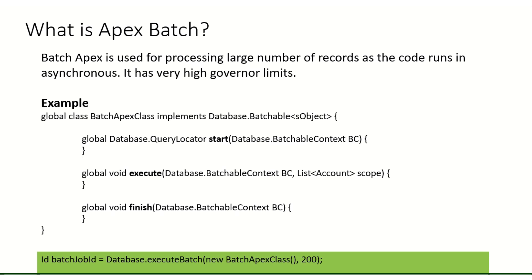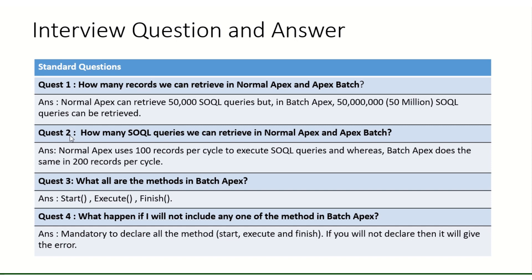There are two ways to run a batch. First, you can use an ID variable and call Database.executeBatch with the batch class name and the chunk size. Second, you can create an object of the class and then call Database.executeBatch with that object.